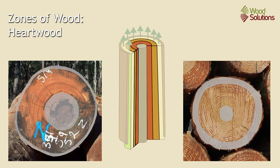The heartwood is older cells in the stem whose main role is to support the tree. The tree fills these older heartwood cells with chemical compounds called extractives, and these improve the wood's strength, durability, and other characteristics. Many of the best wood products that we use come from the heartwood.